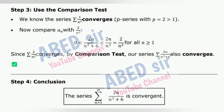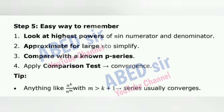Step 4: Conclusion — the series is convergent. Easy way to remember: Look at highest powers of n in numerator and denominator, approximate for large n to simplify, compare with a known P-series, then apply the comparison test to determine convergence. Tip: Anything like Σ(1/n²) or similar series usually converges.